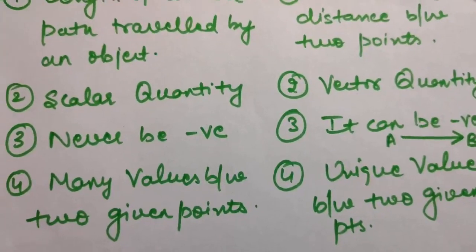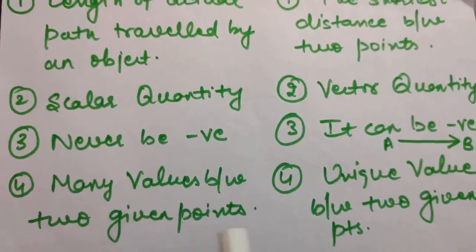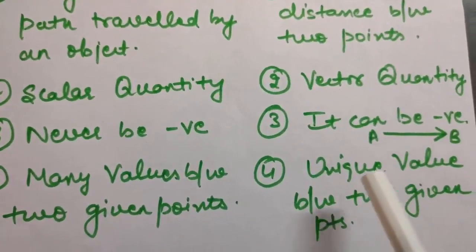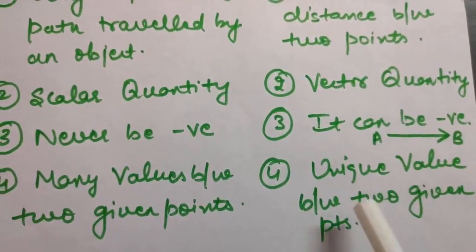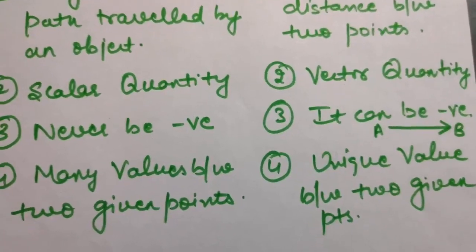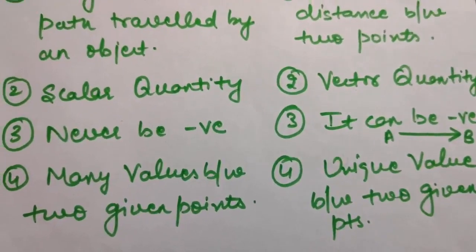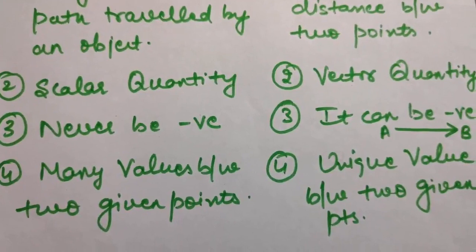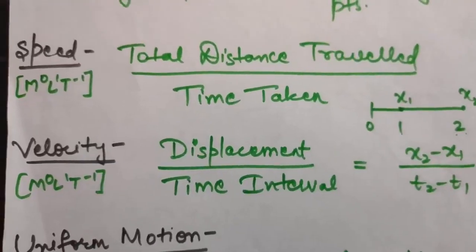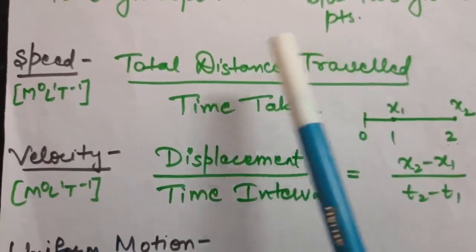As seen in the earlier example, distance can have many values for the same two points A and B, but displacement has a unique value because it is the shortest distance between two points.